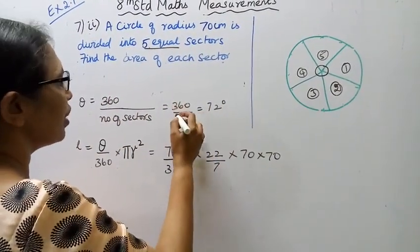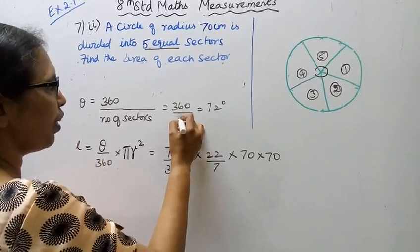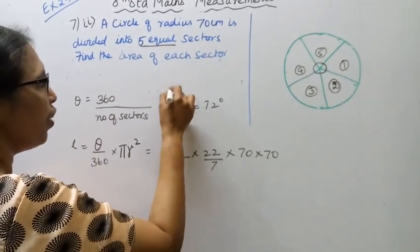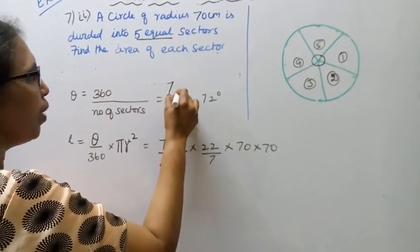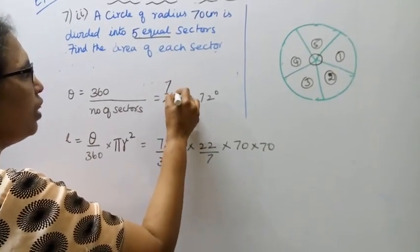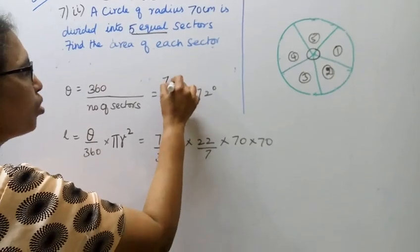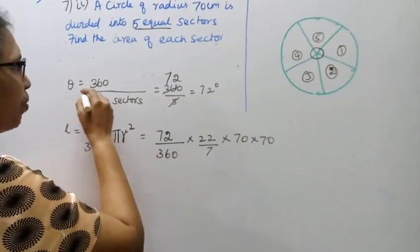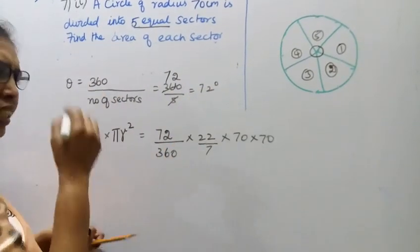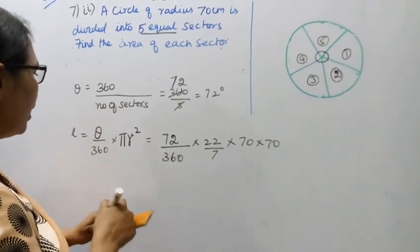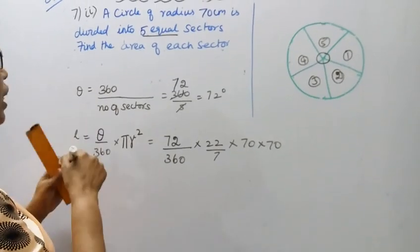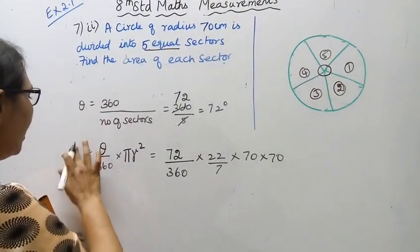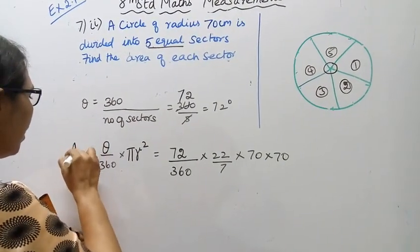Dividing 360 by 5: 5 sevens are 35, balance 10, 5 twos are 10 — giving 72 degrees. So theta equals 72 degrees. Now we use this to find the area of the sector.